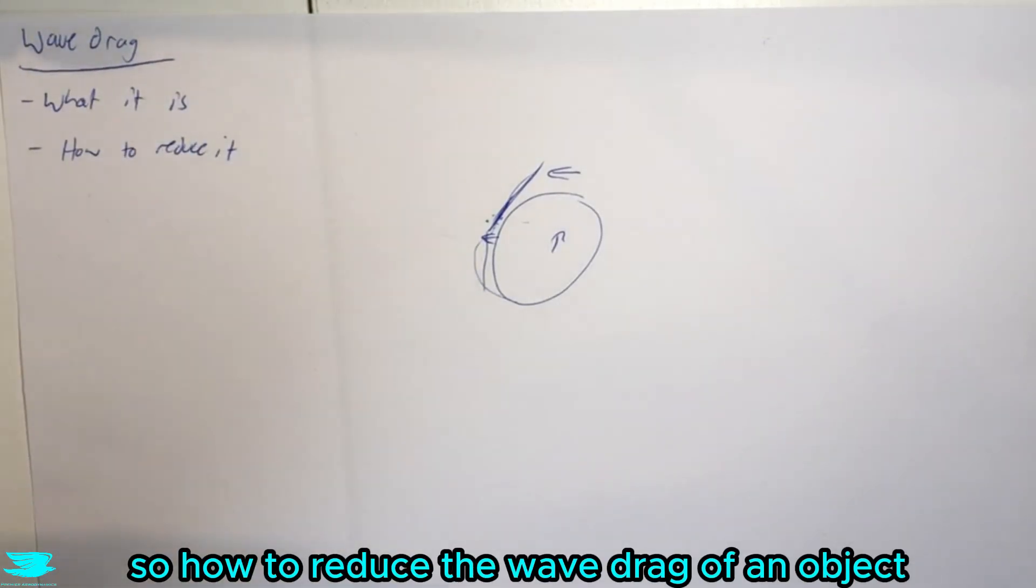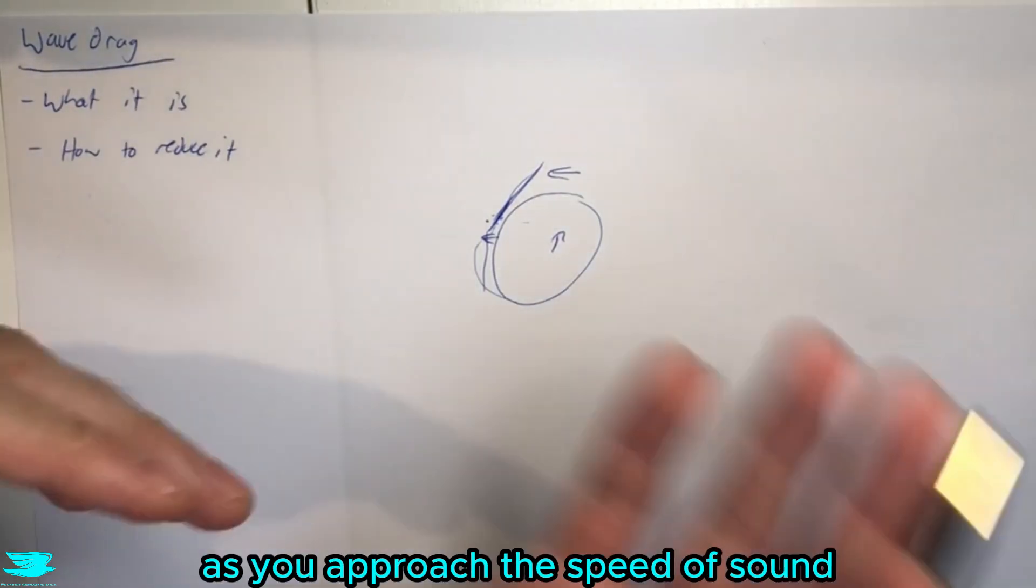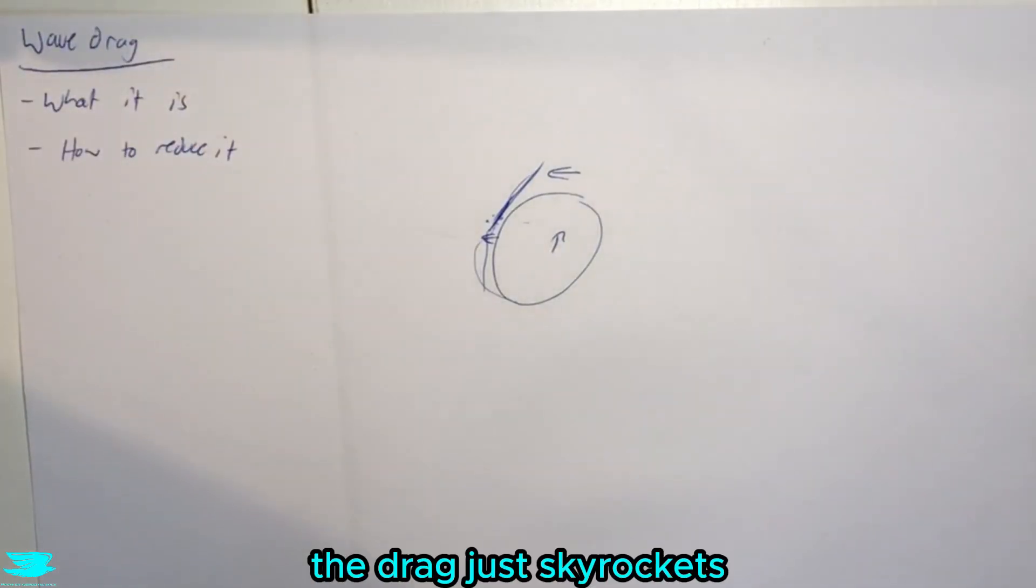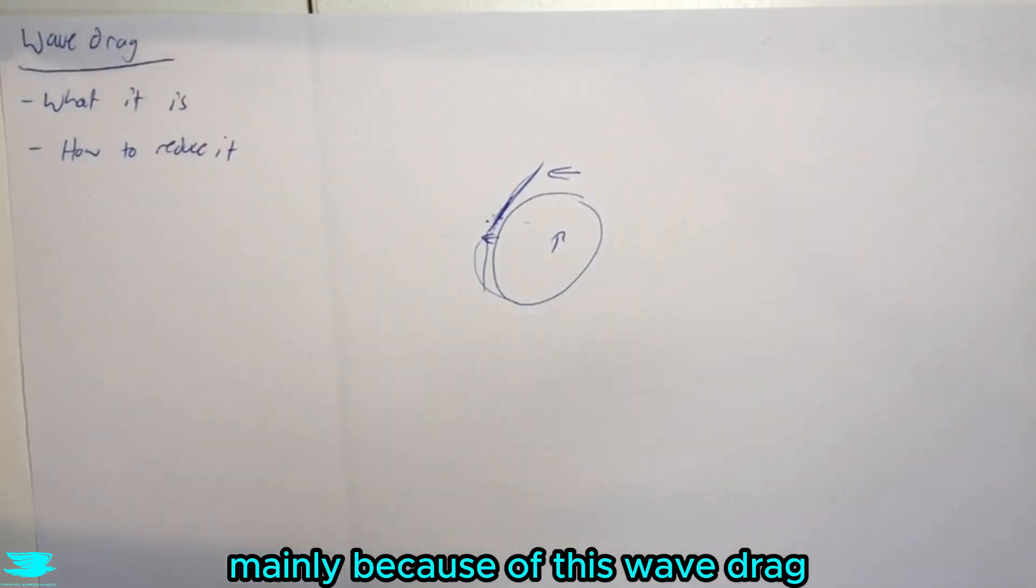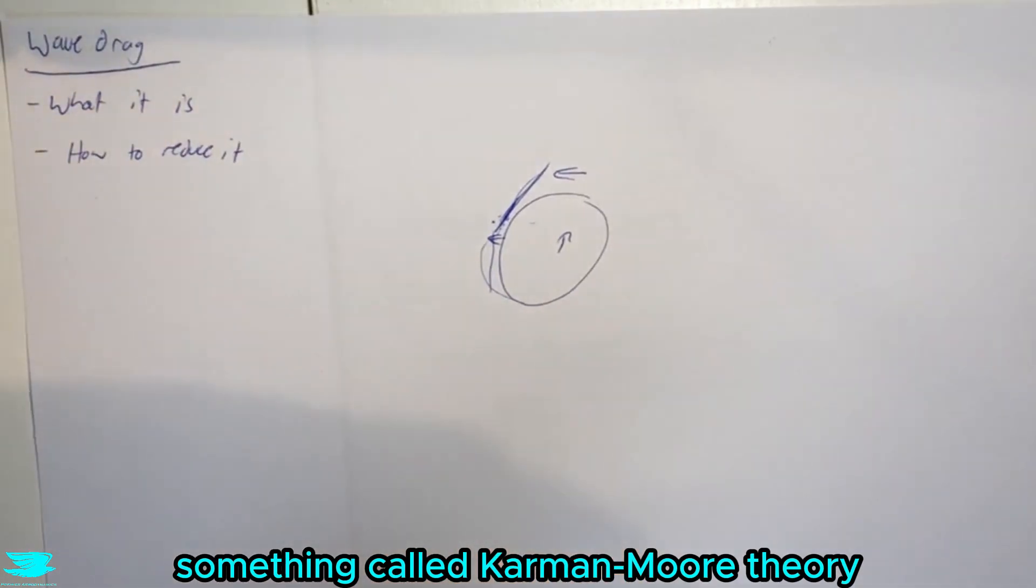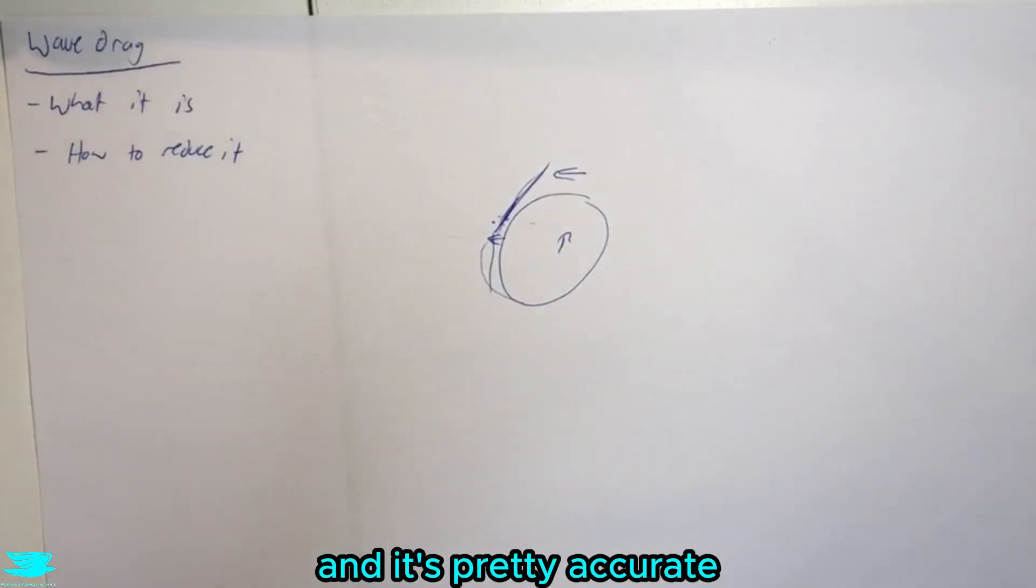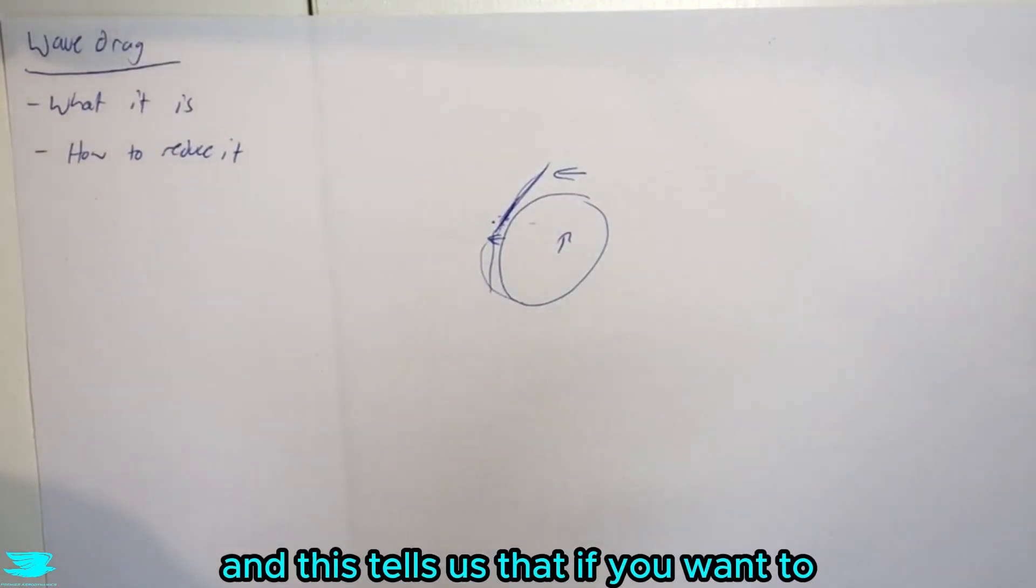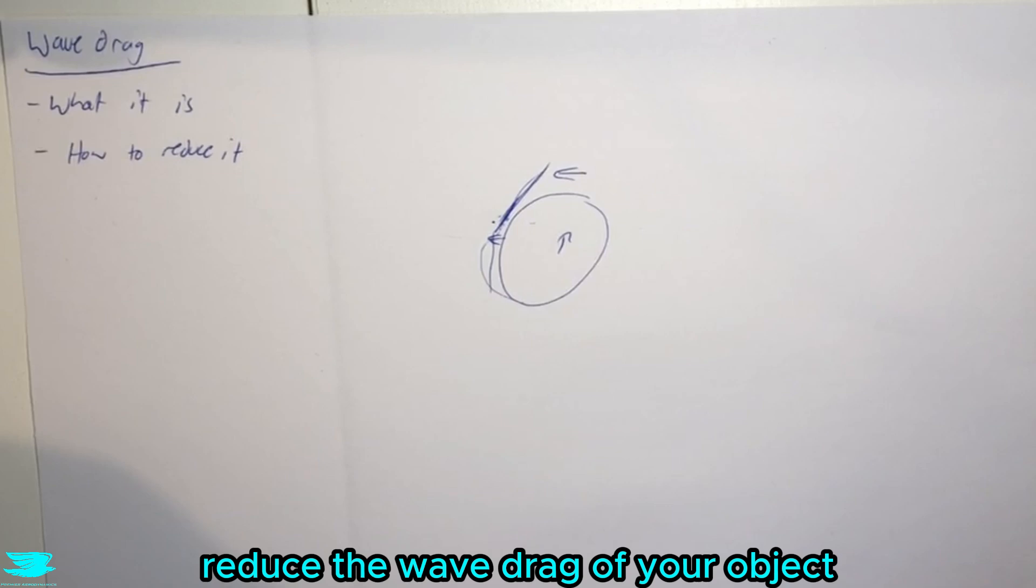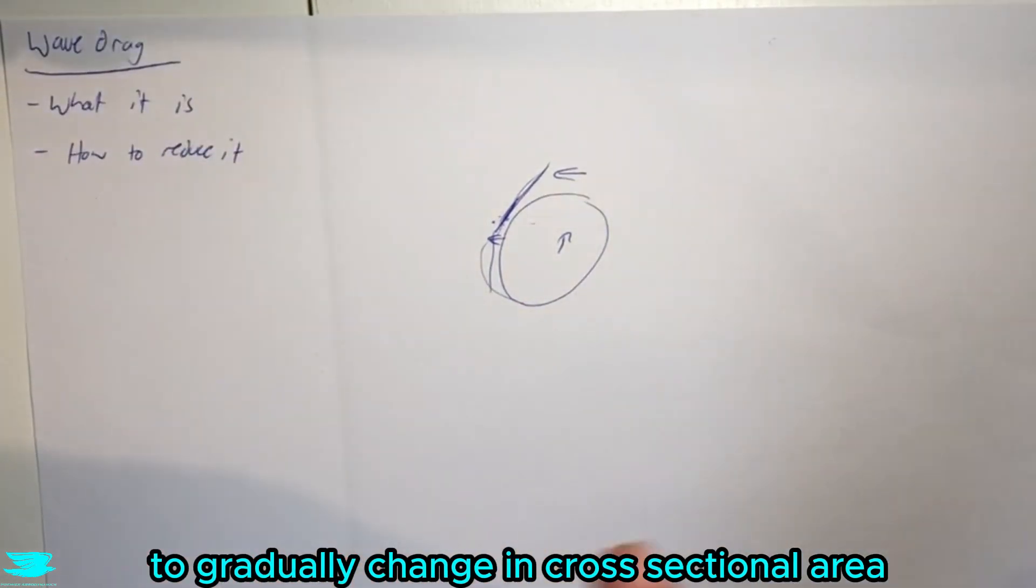So how to reduce the wave drag of an object? Well this is a question back in the 1940s and 50s when they were trying to break the sound barrier, because they saw that as you approach the speed of sound, the drag just skyrockets mainly because of this wave drag. So this led to something called Common-Mohr theory, which is a linearized theory for supersonic flow, and it's pretty accurate. And this tells us that if you want to reduce the wave drag of your object, you want to have whatever your object is to gradually change in cross-sectional area.